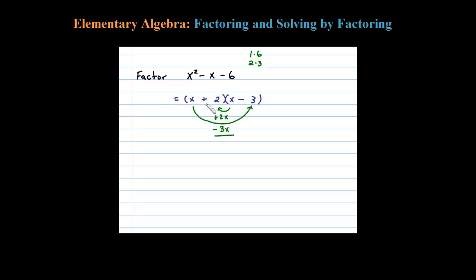Then we have to check. Positive 2 times negative 3 certainly is negative 6. But it actually wanted us to check this by multiplying it all out. Let's see if we got it right.